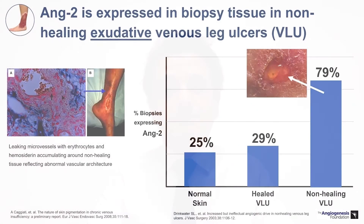ANG2 is also important for wound healing, where the stabilization of blood vessels is needed for wound angiogenesis. In venous leg ulcers, vessels are present but are hyperpermeable and not well-formed. In a wound biopsy, leaking micro-vessels lead to accumulation of red blood cells and hemosiderin around the wound, causing the discoloration seen in the surrounding skin. Due to the abnormal vessel architecture, full wound healing is never completed. Wound biopsies show that non-healing venous leg ulcers express much higher levels of ANG2 compared to normal skin or successfully healed ulcers.